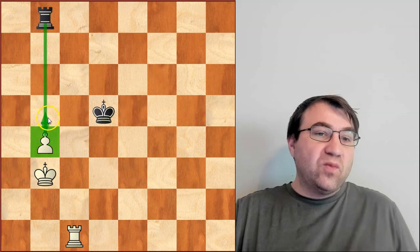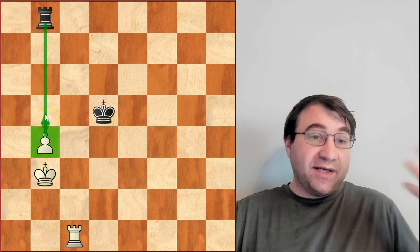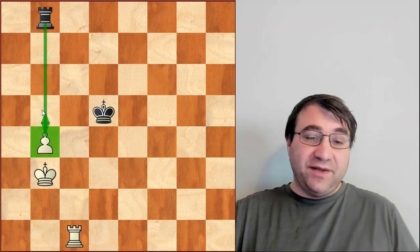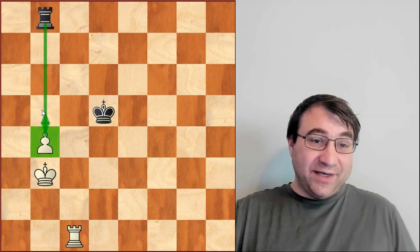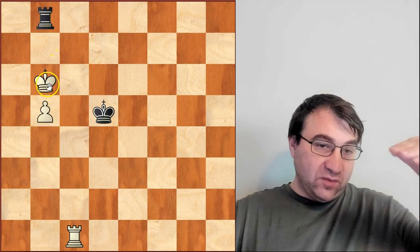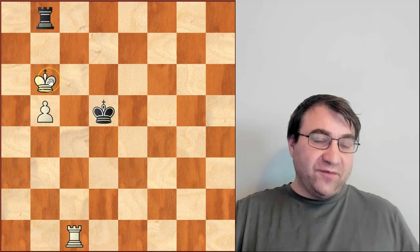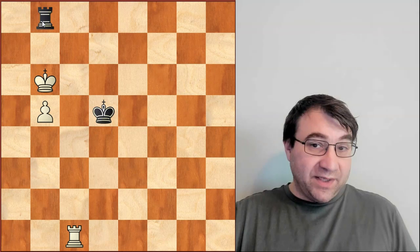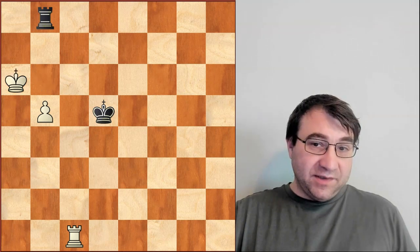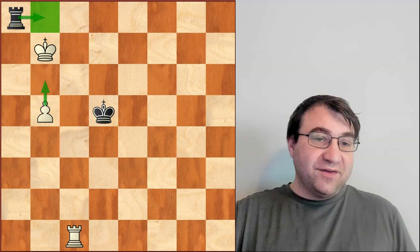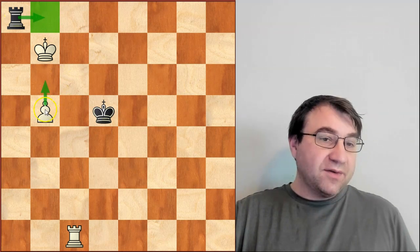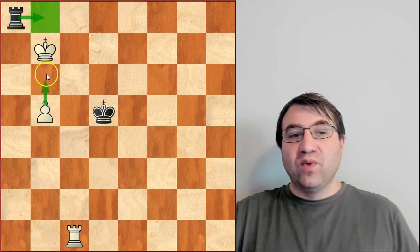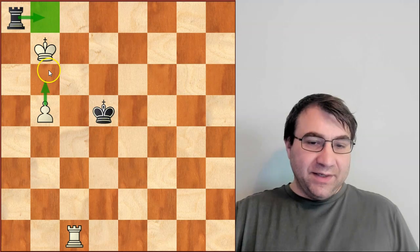Now what's important is we need to understand what scenarios we're getting a draw with the defending side and what scenarios the defending side is losing, or if you're the attacking side, what scenarios the attacking side is winning. So if we adjust all of this up one rank, if white's a little bit further advanced and we don't have those three ranks of separation, white should be able to win here fairly easily. For example, king a6, rook a8, king b7 simply attacks the rook. There is no rook b8 check. That pawn is going to advance on the next move with b5 to b6, and white should be winning.